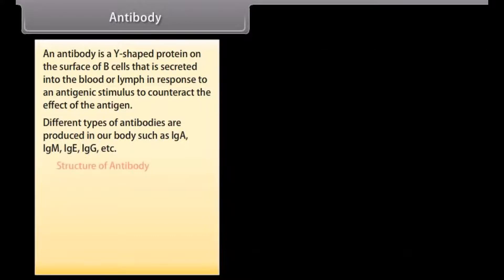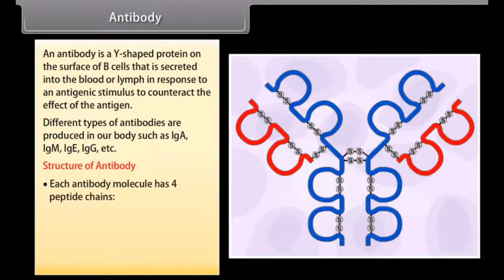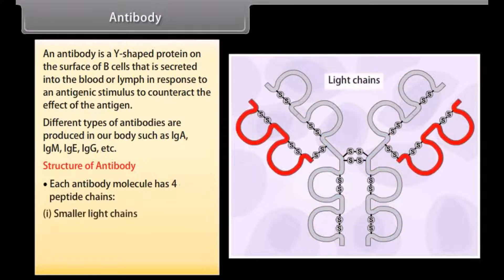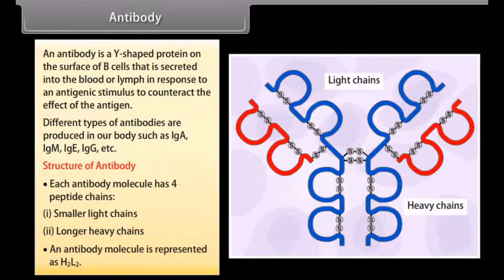Each antibody molecule has four peptide chains: smaller light chains and longer heavy chains. An antibody molecule is represented as H2L2.